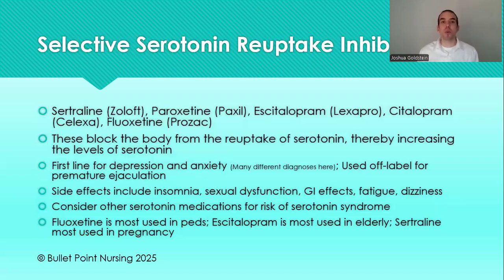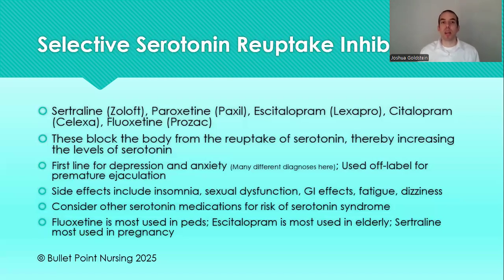Going a bit deeper than RN school: fluoxetine is most recommended for pediatric patients; escitalopram (Lexapro) is most preferred for geriatric patients; and sertraline (Zoloft) is most preferred in pregnancy. For your average otherwise healthy adult who is not pregnant, not elderly, and not pediatric, you have a choice, but Lexapro and sertraline are by far the two most commonly used.